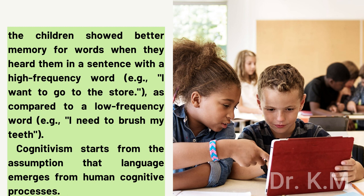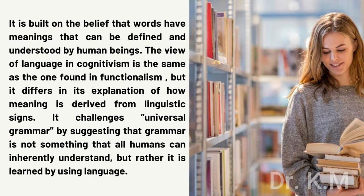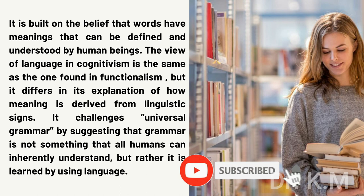Cognitivism starts from the assumption that language emerges from human cognitive processes. It is built on the belief that words have meanings that can be defined and understood by human beings. The view of language in cognitivism is similar to the one found in functionalism, but it differs in its explanation of how meaning is derived from linguistic signs. It challenges universal grammar by suggesting that grammar is not something all humans can inherently understand, but rather it is learned by using language.